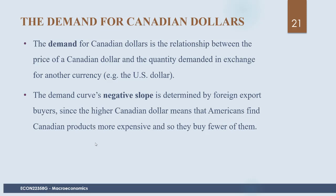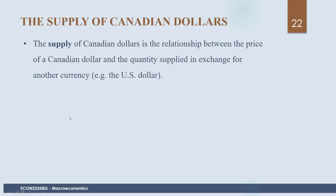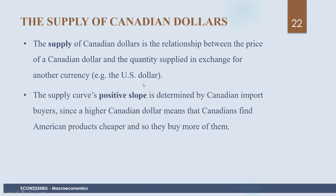The demand curve's negative slope is determined by foreign export buyers. A higher Canadian dollar means Americans find Canadian products more expensive, so they buy fewer of them. In terms of supply, the supply of Canadian dollars comes from Canadians who are buying foreign exchange. The supply curve has a positive slope, determined by Canadian import buyers. When Canadians buy something from abroad, they sell Canadian dollars on the foreign exchange market and buy foreign currency. A higher Canadian dollar makes American products cheaper, so Canadians buy more of them.